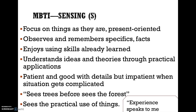The next letter we'll go over is S — Sensing. Sensing types focus on things as they are and are present-oriented. They observe and remember specifics and facts, enjoy using skills already learned, and understand ideas and theories through practical applications. They're patient and good with detail but impatient when a situation gets complicated. They tend to see the trees before the forest and see the practical use of things.